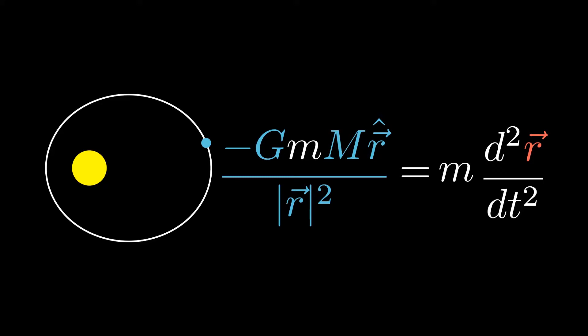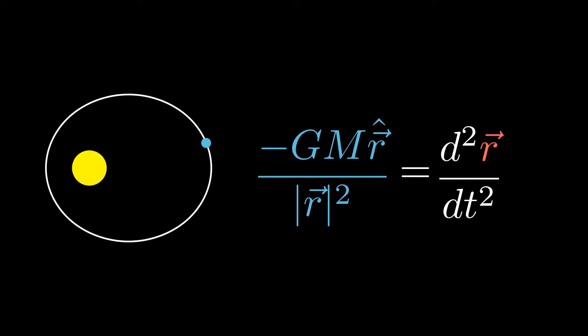This is in the direction from the Sun to the Earth, hence the unit vector in this equation. Let's also write a as the second derivative of the position vector r. We can cancel off the m and we are left with this equation.